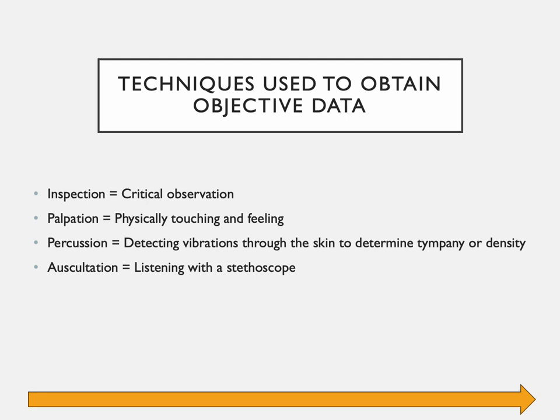Next, we'll learn about obtaining objective data and the techniques used — this is the order with which we obtain objective data. There is one exception and that's when we are doing the abdomen. I'll get into that later, because I want to get the standard part in your head first before we start changing it up.